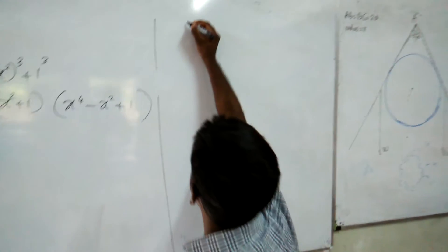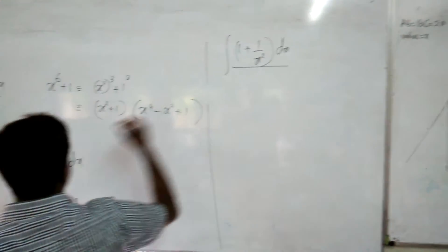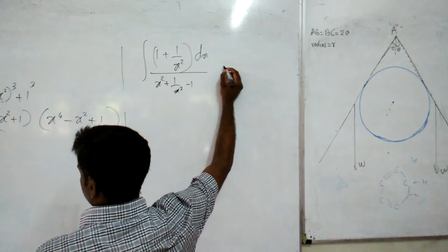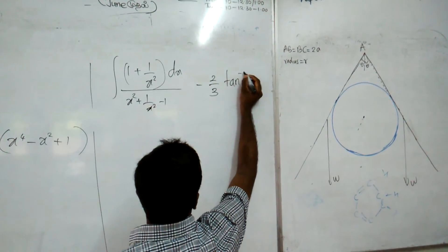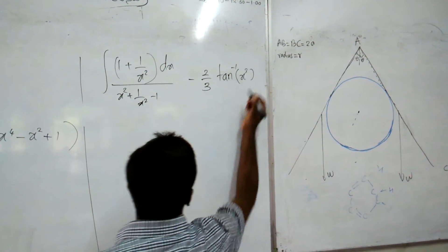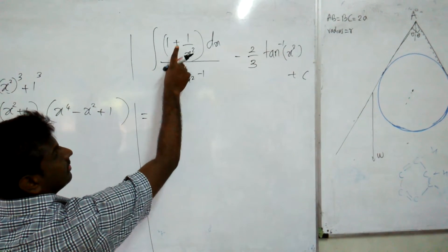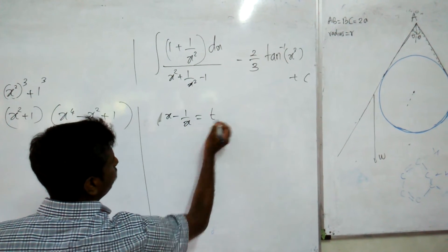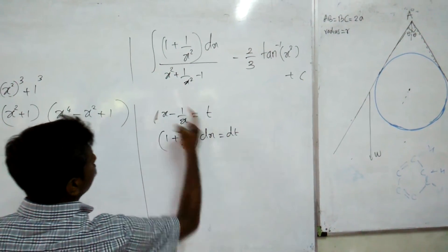So for the first part: integral of (1 + 1/x²) dx divided by (x + 1/x)³ minus 1, minus 2/3. The second part is easily a tan inverse form in x³. For the first part, use the substitution x minus 1/x = t, so (1 + 1/x²) dx = dt.